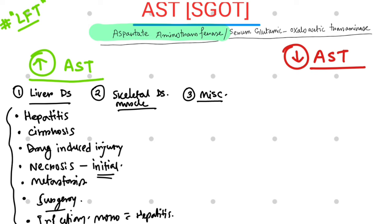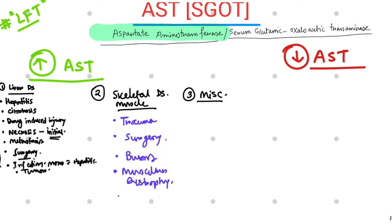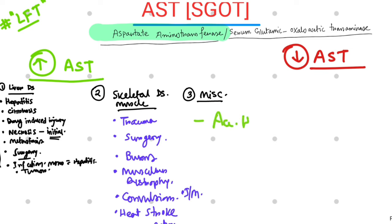Skeletal muscle diseases causing AST elevation include trauma, recent non-cardiac surgery, severe burns, muscular dystrophy, recent convulsions, heat stroke, myopathy or myositis, and intramuscular injections — all of which can cause skeletal muscle damage and raise AST levels. Miscellaneous causes include acute hemolytic anemia, hemolysis, and acute pancreatitis.